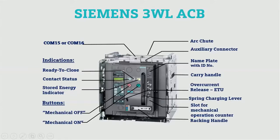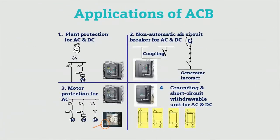ACBs are used for plant protection in AC or DC source applications. You can also manually trip the ACB by pressing the button. For motor protection, ACBs are used, and in case of a short circuit current the ACB will trip and protect the load.